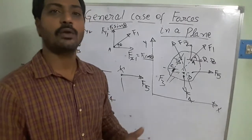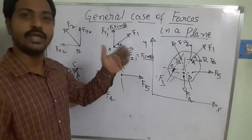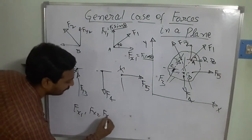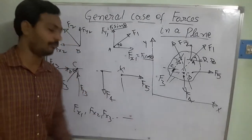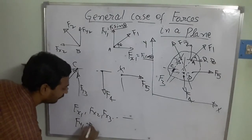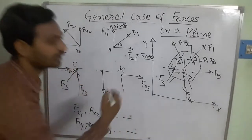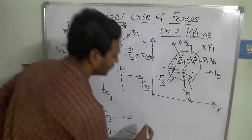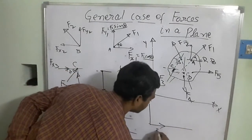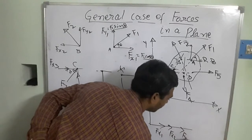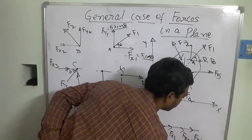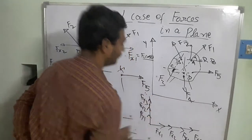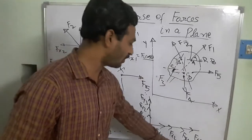After resolving all forces, we collect the x-components: Fx1, Fx2, Fx3, Fx4, and the y-components: Fy1, Fy2, Fy3, and so on. It is now clear that we have resolved the entire system of forces into x-components and y-components, which can then be converted into a resultant component.